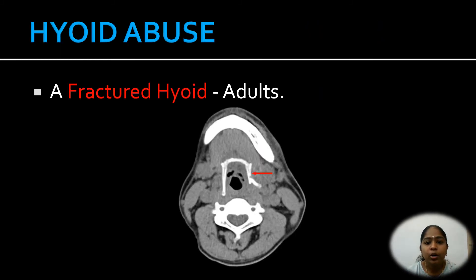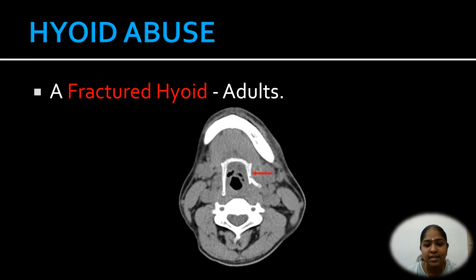Hyoid abuse: due to its position, the hyoid bone is not easily susceptible to fracture. In a suspected case of murder or physical abuse, a fractured hyoid strongly indicates throttling or strangulation in adults. However, this is not the case in children and adolescents, where the bone is still flexible as ossification is not yet complete.